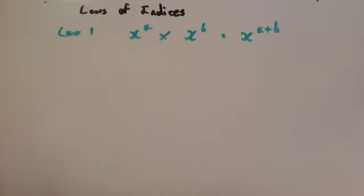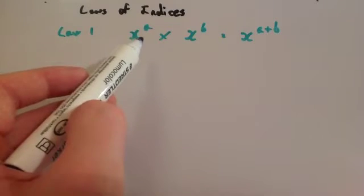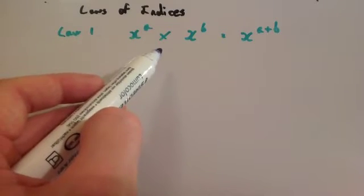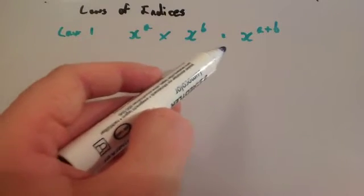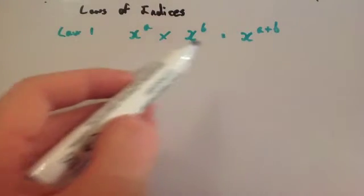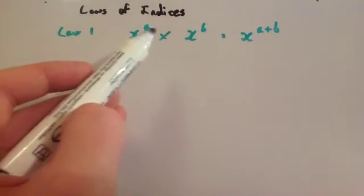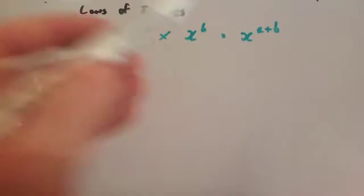Okay, so law one. If you've got x to the power of a, and you times it by x to the power of b, you get x to the power of a plus b. In other words, you add the two powers together and you'll find the new power.